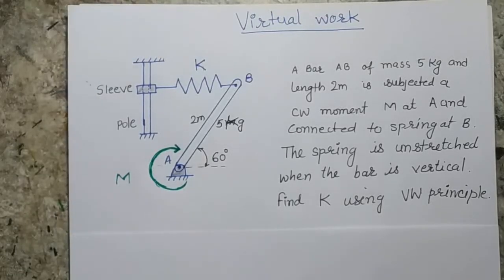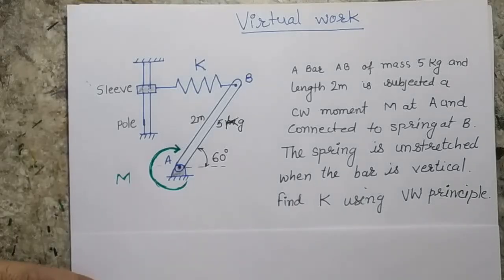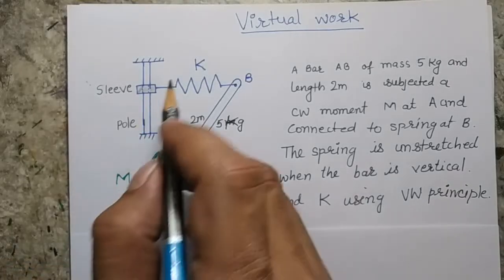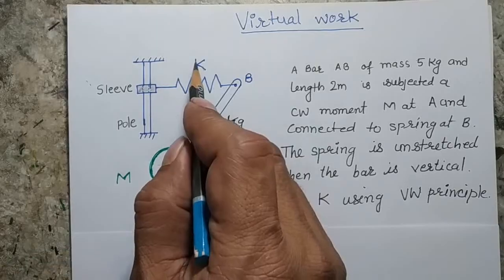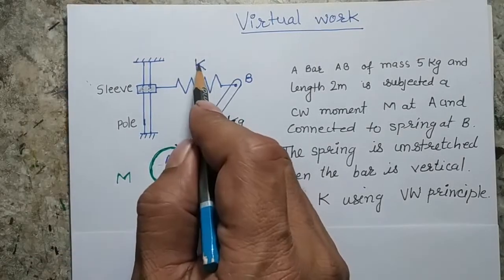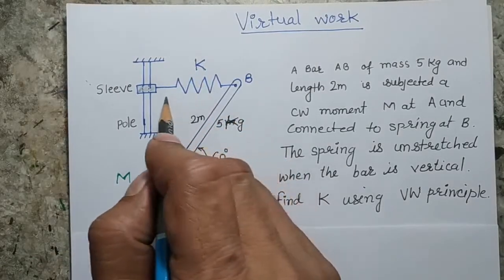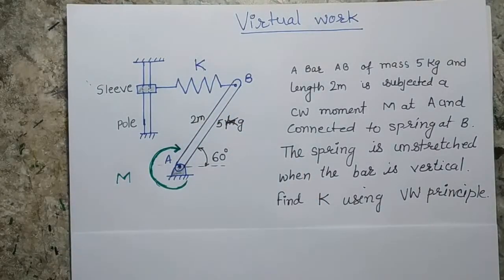This is a problem of virtual work where we have to apply the principle of virtual work to find the value of K, the spring constant, for the given system which is in static equilibrium.